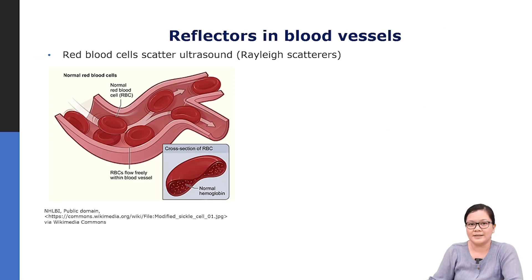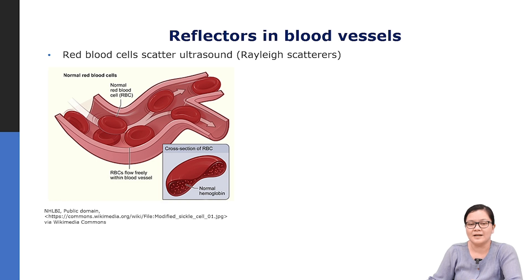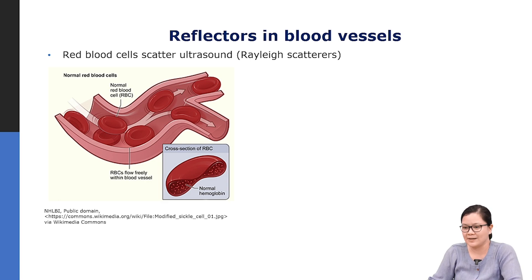What are the reflectors in your body? When we talk about blood vessels, the main reflectors are the red blood cells. The blood cells scatter ultrasound, and these cells are much smaller than the ultrasound wavelength. Recalling scattering physics, the parameter Ka — the wavenumber times the diameter of the scatterer — if it is much less than 1, the scatterer is considered a Rayleigh scatterer. Red blood cells in the body are considered Rayleigh scatterers.